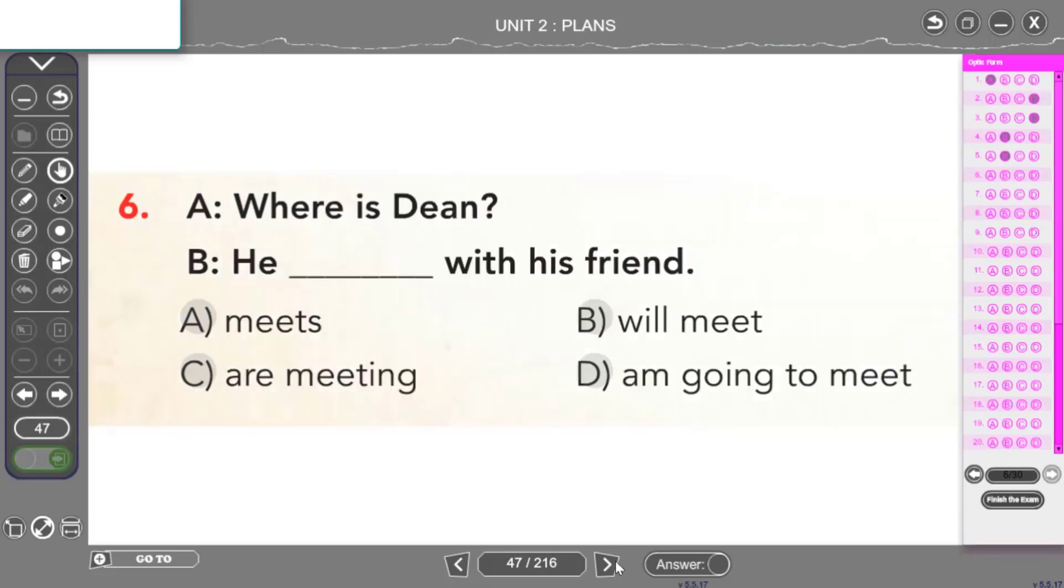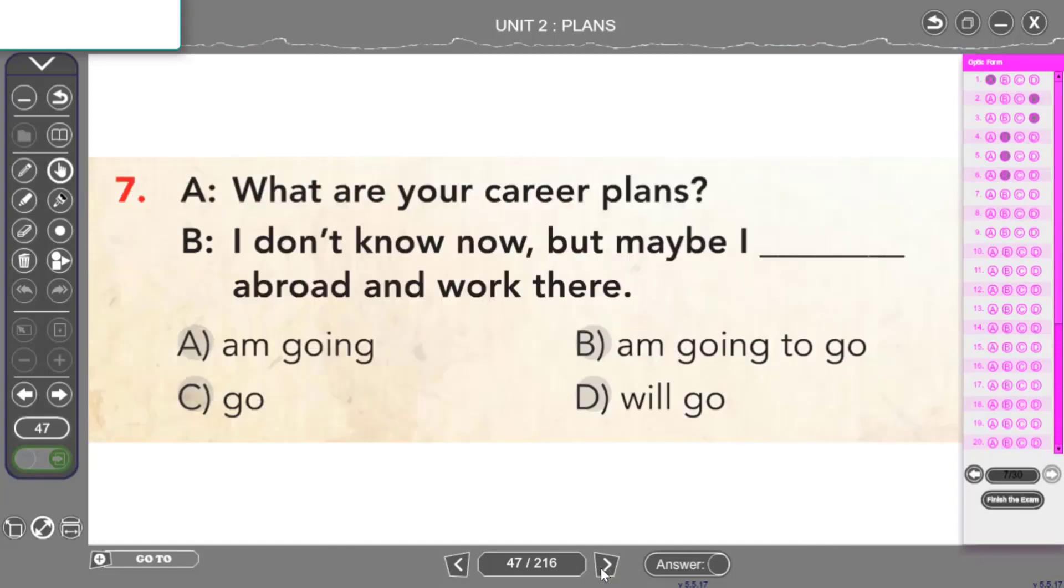Where is Dean? Dean nerede? diye sormuşum. Zaten şu andan bahsediyorum. Yani anlık bir durumdan bahsediyorum. Dean nerede? diye sormuşum. Arkadaşlarıyla buluşacak diyeceğim. O anda o an esnasında bir konuşma olduğu için be going to kullanabileceğim. Ama anlık karar olduğu için ne kullanacağım? Will kullanacağım. He will meet his friends. Arkadaşlarıyla buluşacak demiş oldum.